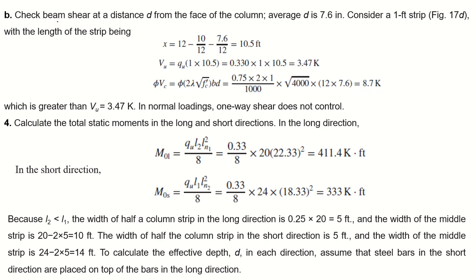Now check one-way (beam) shear at a distance d from the face of the column. The average d = 7.6 inches. Consider a one-foot strip; the length x = 12 − 10/12 − 7.6/12 = 10.5 feet. Vu = qu × 1 ft × 10.5 = 3.47 kips, and φVc = 8.7 kips, which is greater than Vu. One-way shear does not control, as is typically the case.